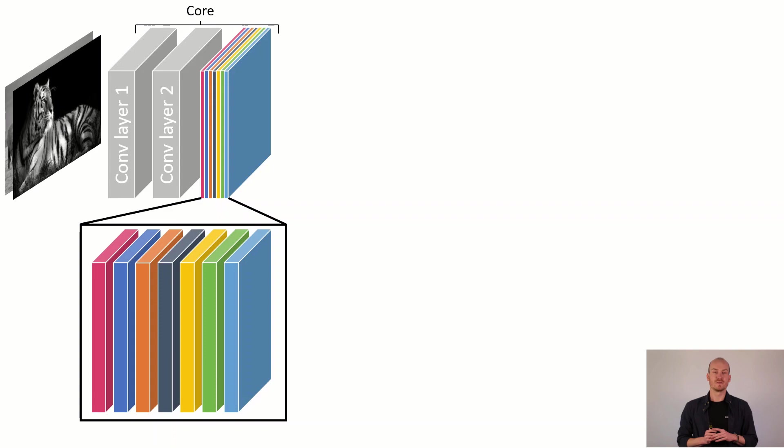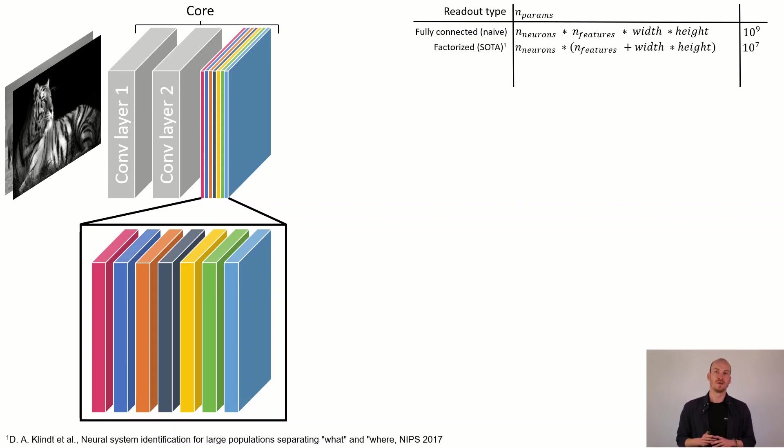For that, let's remember that the core consists of different convolutional layers. These layers have different features which the readout then reads out from. So what we would try to do is that we map these features to one scalar. This is the job of the readout. If we do this naively we can just do it fully connected and we would arrive at some range of 10 to the power of 9 parameters. In the previous state-of-the-art, the factorized readout, this actually shrinks down to 10 to the power of 7.